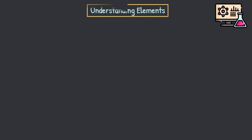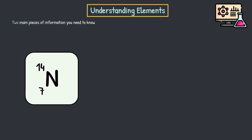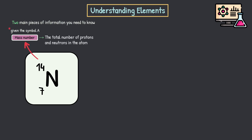So the first thing here is understanding elements. There are two main pieces of information you need to know. Let's look at this example of nitrogen right here — this is how you would see it in the periodic table. What does this top number 14 mean? This is what we refer to as our mass number, and this is simply the total number of protons and neutrons in the atom or in the nucleus. This is given the symbol capital A. And this 7, our bottom number — this is our atomic number, the number of protons in the nucleus, given the symbol capital Z.